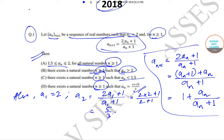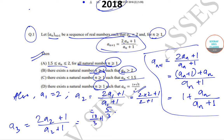Now let us compute a_3. It will be equal to twice of a_2 plus 1 upon a_2 plus 1, which equals 10/3 plus 1 divided by 5/3 plus 1, and this comes out to be 13/8.